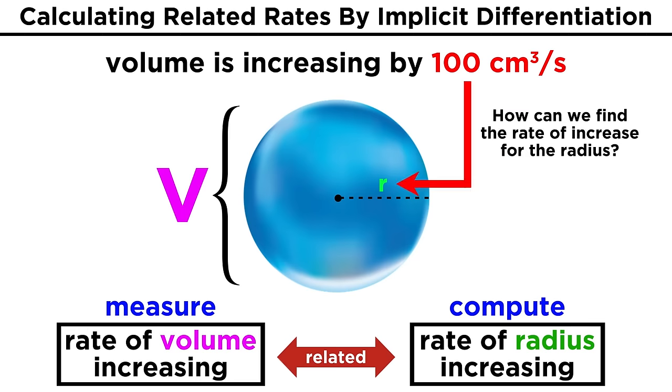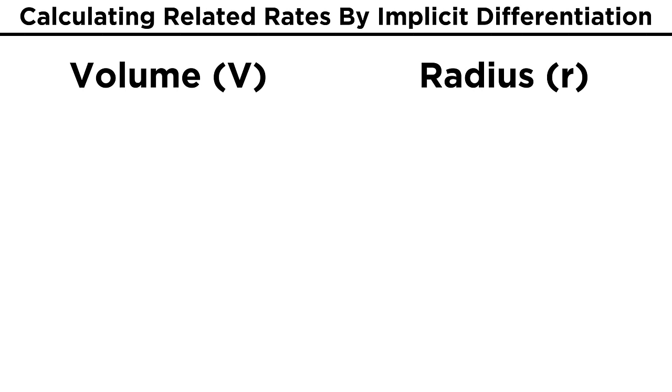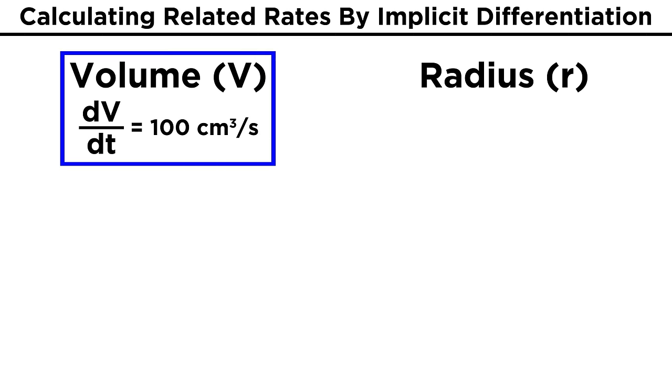How can we use this to find out how fast the radius is increasing at a particular instant, like the moment when the diameter of the balloon is fifty centimeters? Well, let's say that volume is V and radius is R. Then DV over DT, or the change in volume over time, equals one hundred cubic centimeters per second, as we measured.